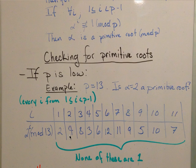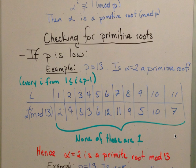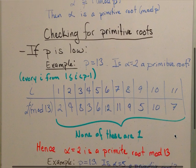for each of those numbers we calculate 2 or alpha to the i mod 13. So we get all these numbers, none of which are 1. Therefore, we can say alpha equals 2 is a primitive root mod 13.